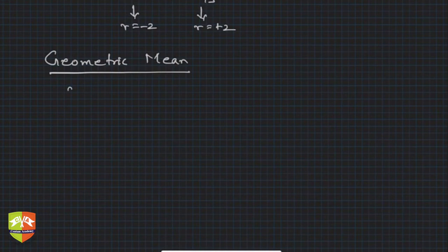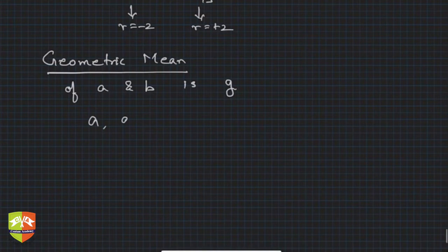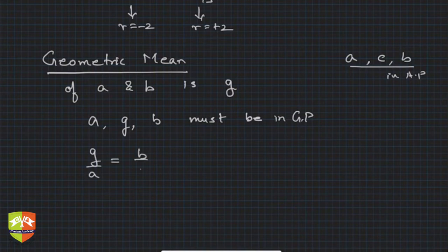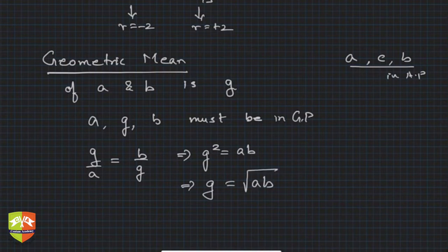The geometric mean of a and b, let's call it g. So a, g, and b must be in GP — that's what we learned last session. In AP, if c was the arithmetic mean, then a, c, b were in AP. Similarly here, g is the geometric mean, so a, g, b must be in GP. That is possible when g/a = b/g (common ratio), which means g² = ab, so g = √(ab).